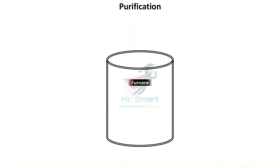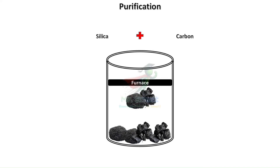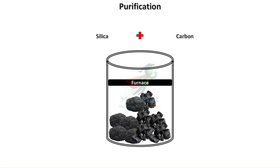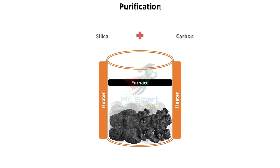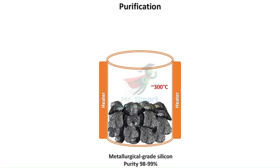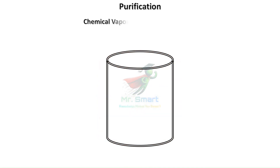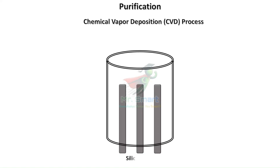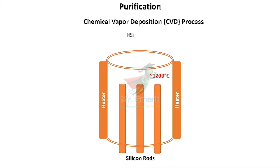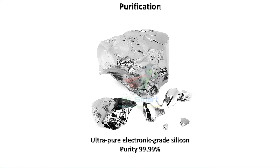The process starts by purifying silicon. Silica is melted down and reacted with carbon at high temperatures to produce metallurgical-grade silicon. This is further refined through several chemical processes, like trichlorosilane formation, purification by distillation, and chemical vapor deposition, to create ultra-pure electronic-grade silicon.